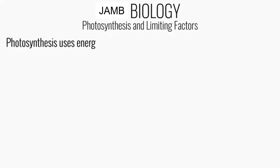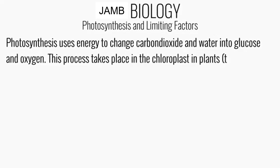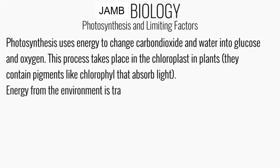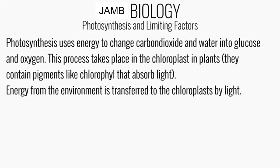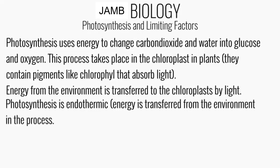Photosynthesis uses energy to change carbon dioxide and water into glucose and oxygen. This process takes place in the chloroplasts in green plants, which contain pigments like chlorophyll that absorb light. Energy from the environment is transferred to the chloroplasts by light. Photosynthesis is endothermic, which means energy is transferred from the environment in the process.